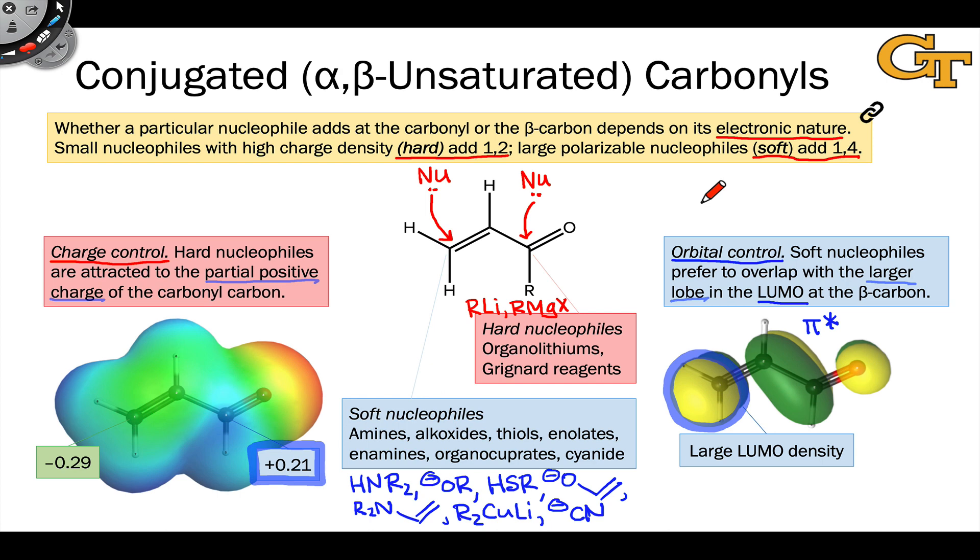And so to summarize, soft nucleophiles add to the beta carbon through a HOMO-LUMO overlap effect, where the largest lobe in the LUMO gets engaged, and that's on the beta carbon, while hard nucleophiles add to the carbonyl carbon selectively as a result of charge control. They're attracted to the partial positive charge of the carbonyl carbon, which is generally greater, more positive in other words, than the partial charge on the beta carbon.